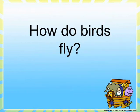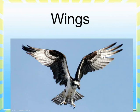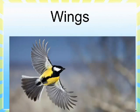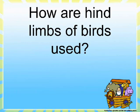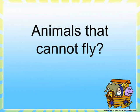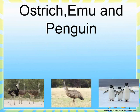How do birds fly? With wings. What are the forelimbs of birds? Wings. How are the hindlimbs of birds used? To perch on trees, walk, and hop. Animals that cannot fly — ostrich, emu, and penguin.